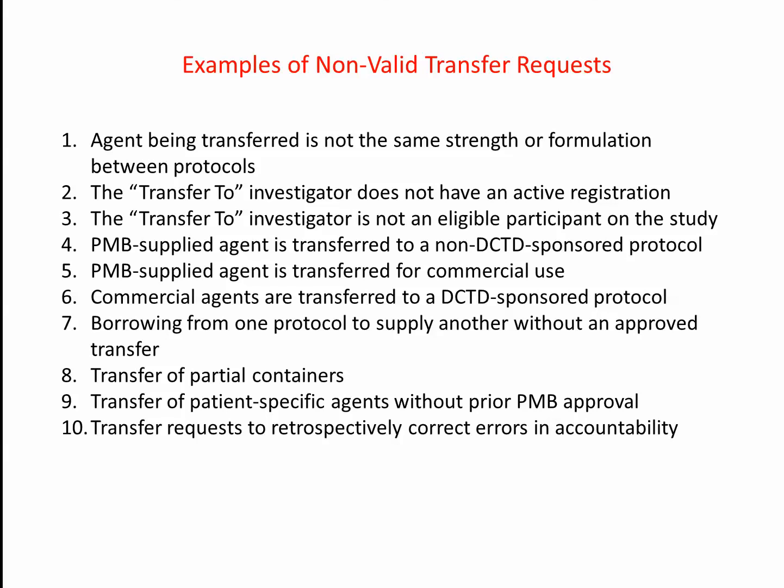Examples of instances when an agent transfer is not valid include: 1) the agent being transferred is not the same strength or formulation between protocols; 2) the transfer to investigator does not have an active registration; 3) the transfer to investigator is not an eligible participant on the study; 4) PMB-supplied agent is transferred to a non-DCTD-sponsored protocol; 5) PMB-supplied agent is transferred for commercial use; 6) commercial agents are transferred to the DCTD-sponsored protocol.